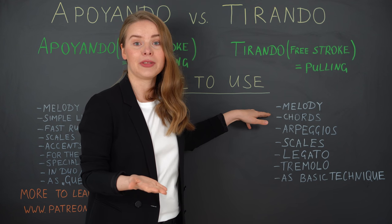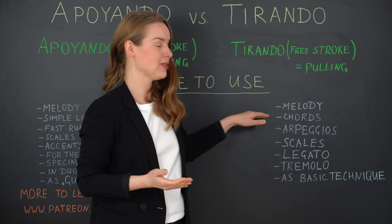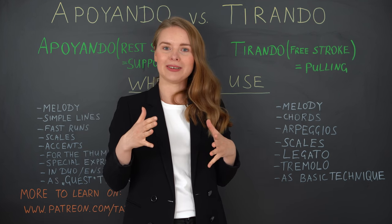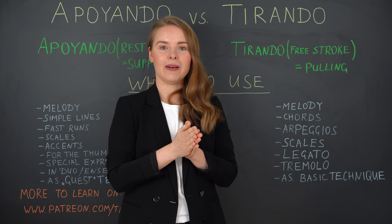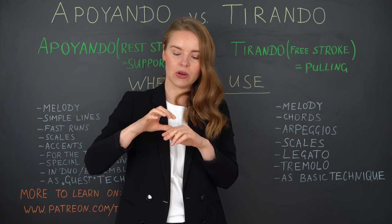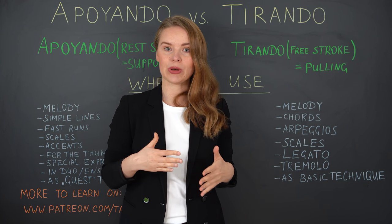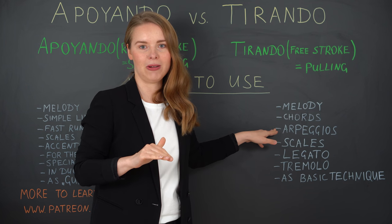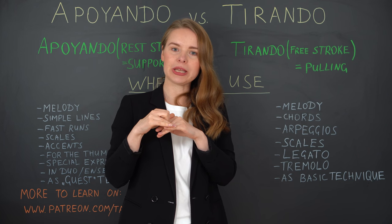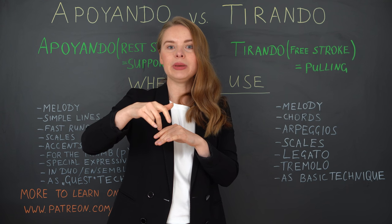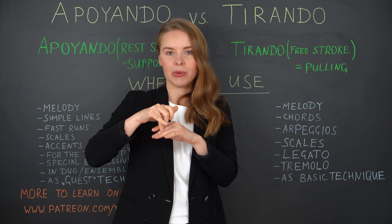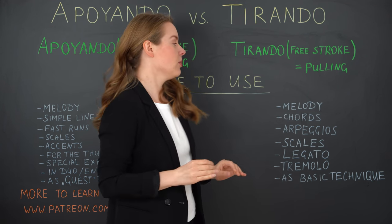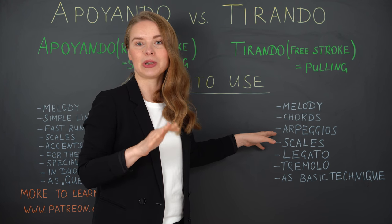Chords clearly work only with tirando. Arpeggios also seem obvious, but I see — especially with beginners — that when you learn rest stroke first, you automatically start applying it to multiple strings. Please be careful: with arpeggios we don't use apoyando at all. A possible exception is the very top note of an arpeggio — for example, a high E — where you could use apoyando to make the melody stronger, since after that you go down and don't damp anything. But in most cases, tirando is absolutely the right choice for arpeggios.